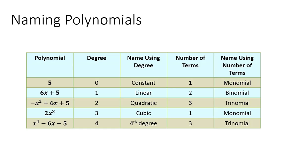Negative x squared plus 6x plus 5 has degree 2, which we call quadratic, and it has three terms so it's called a trinomial. Next, 2x cubed has degree 3, which we call cubic, and since it has one term it's a monomial. Finally, x to the fourth minus 6x minus 5 has degree 4 — we call those fourth degree polynomials — and since it has three terms it's also a trinomial.